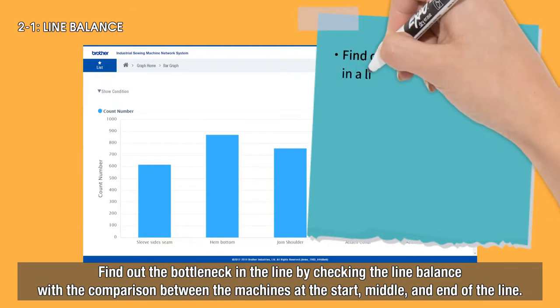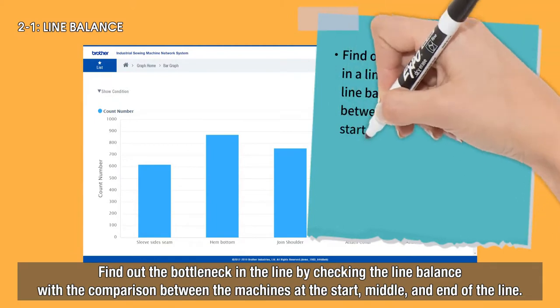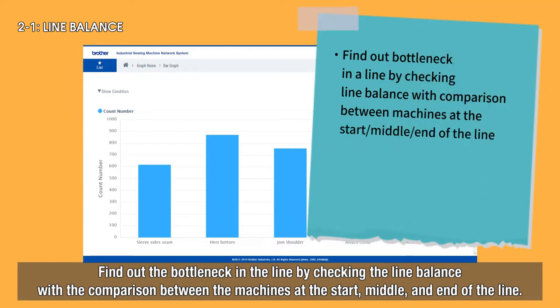Find out the bottleneck in the line by checking the line balance with the comparison between the machines at the start, middle, and end of the line.